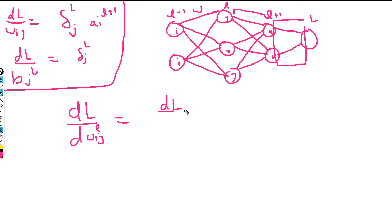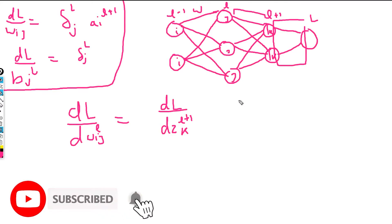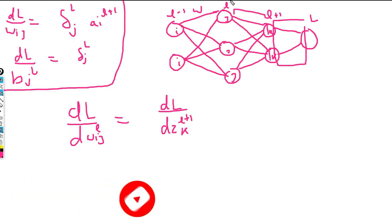The loss dL depends on dz_k(l+1). As I said earlier, up until this point we have already found the backpropagation loss coming from ahead. So we are going to use that same loss: d of z_k(l+1), which has already been computed in the previous part.